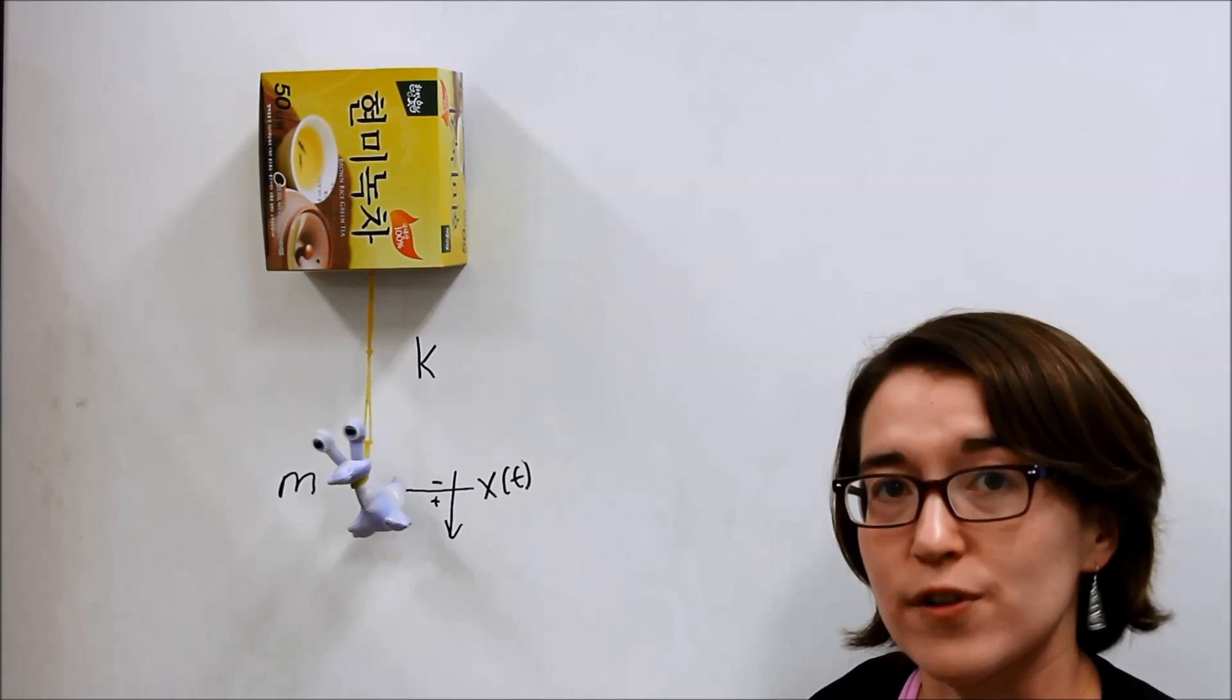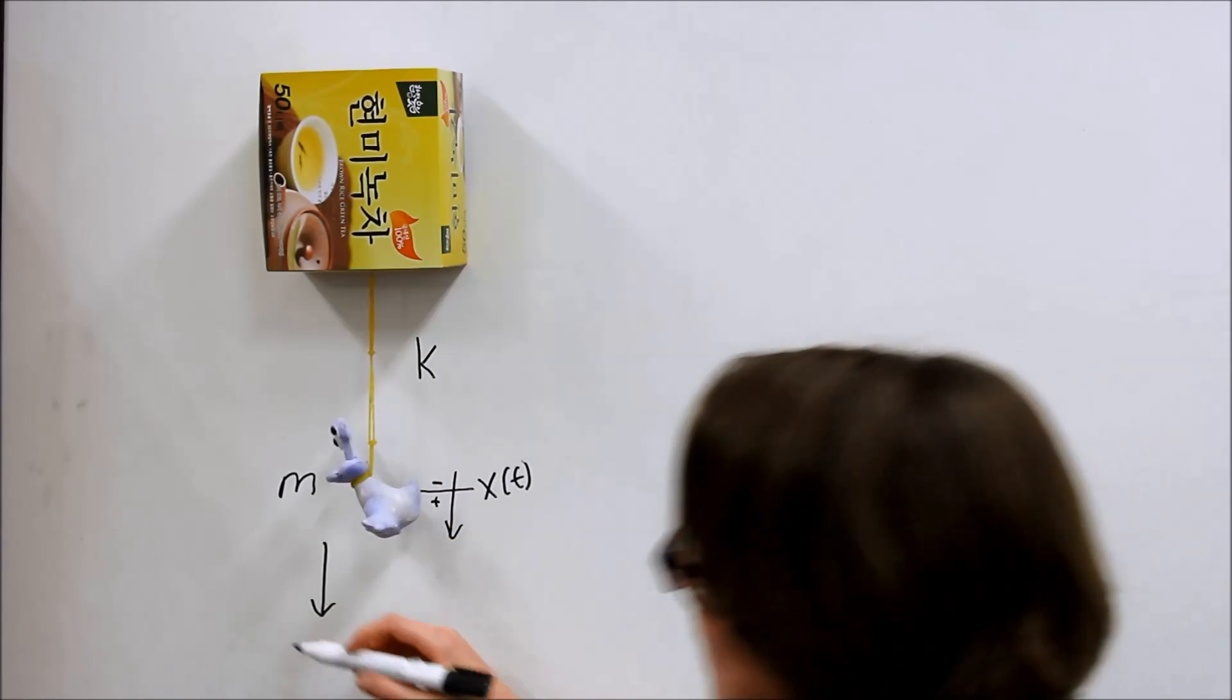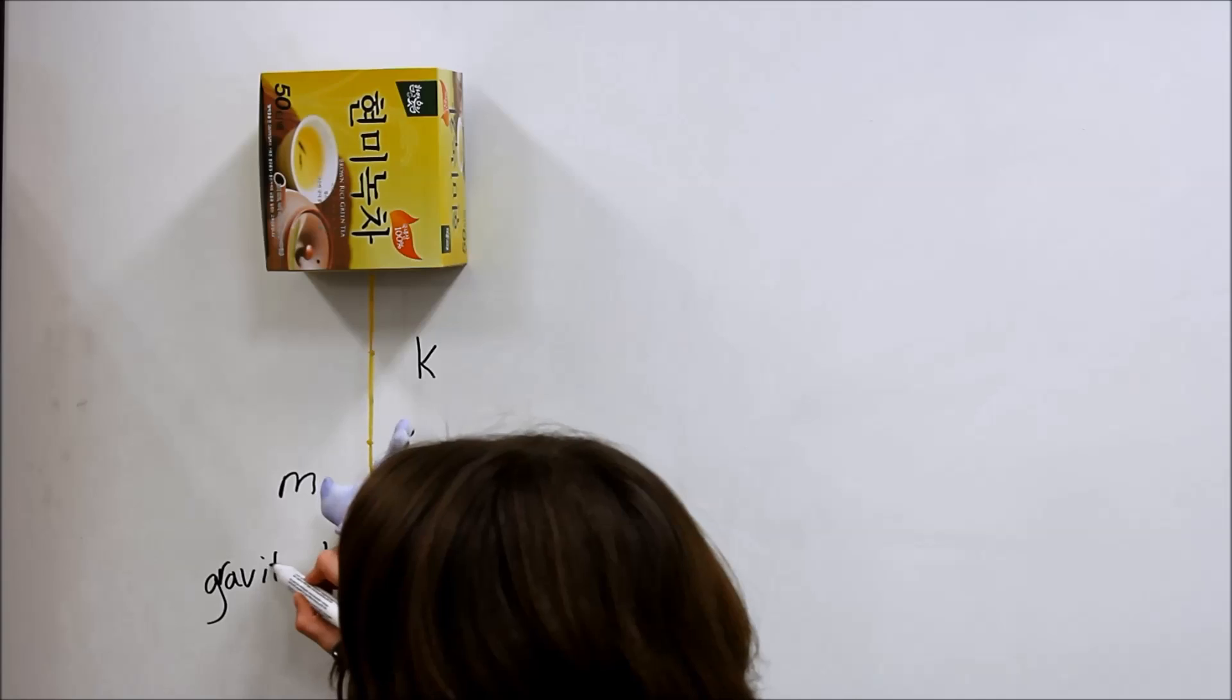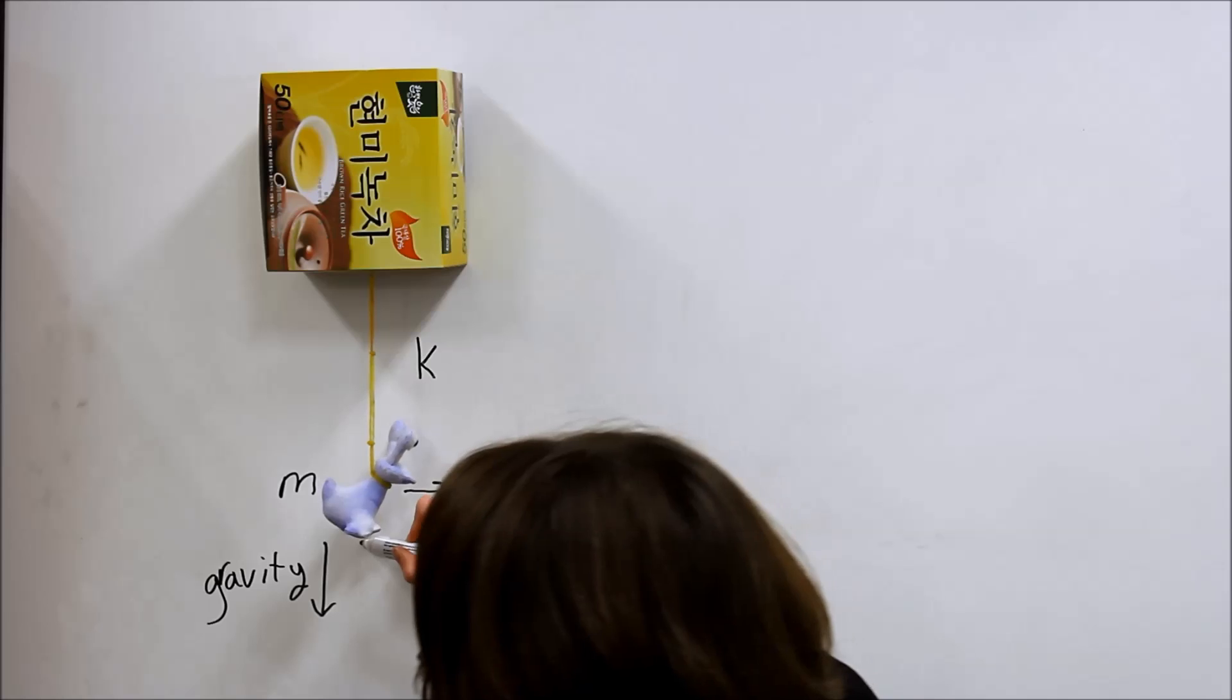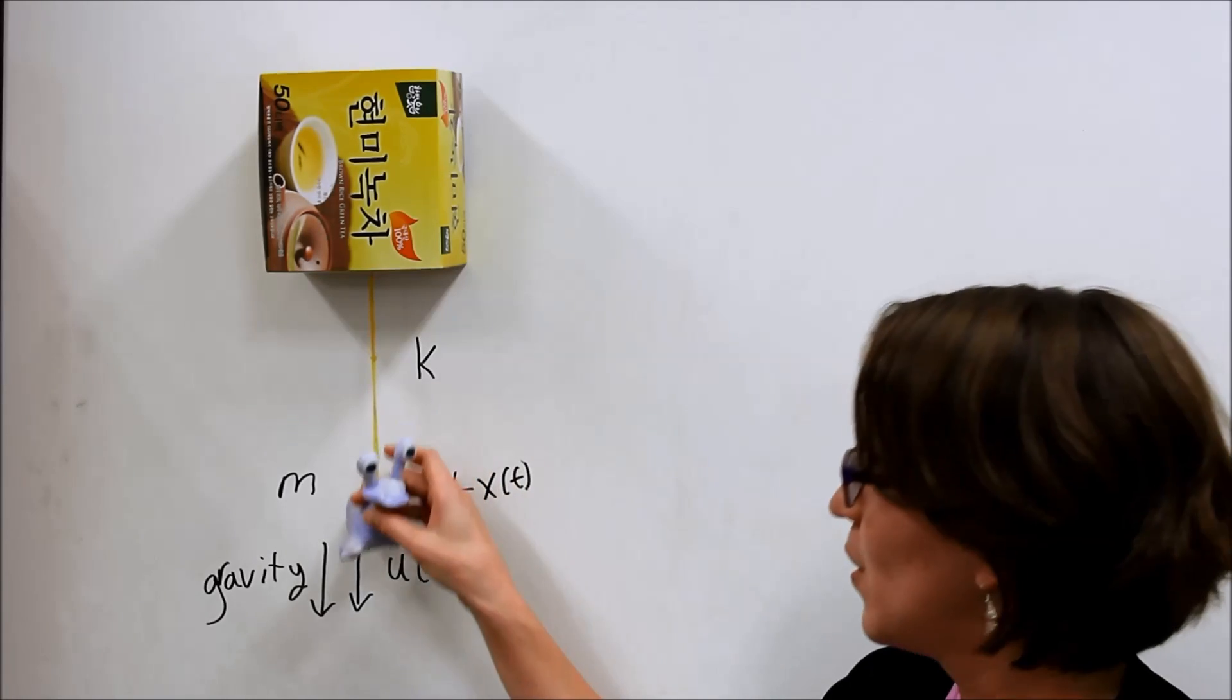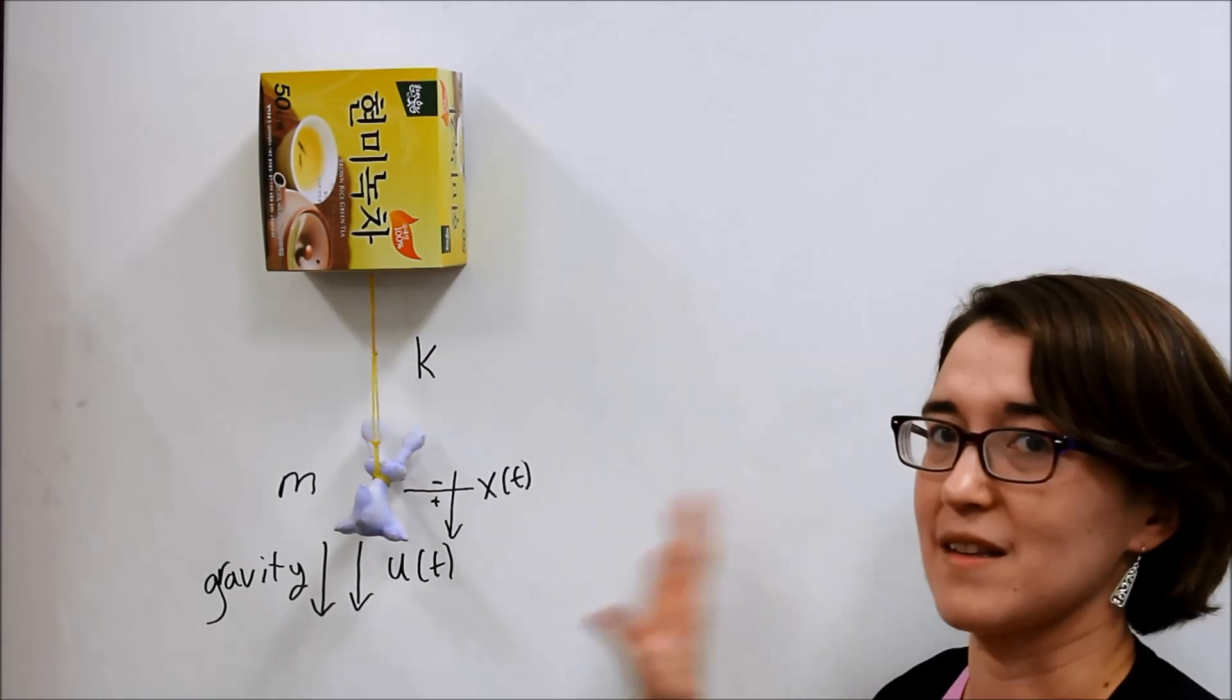And we still have some other forces as well. One of them is gravity, right? So, gravity is pushing downward on Valerie. Gravity pushing down. And we also need an input. So, I'm going to be the input, or someone would be the input, and we'll push Valerie in the downward direction for positive input.